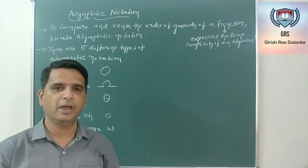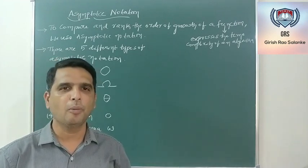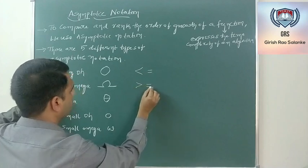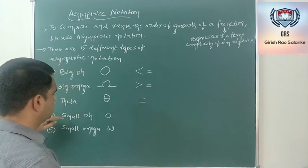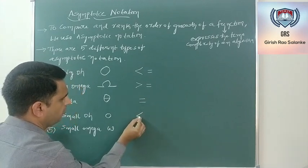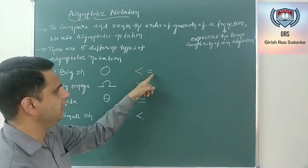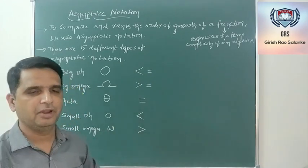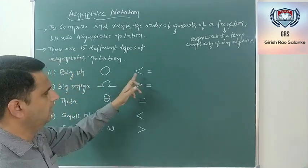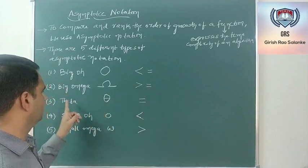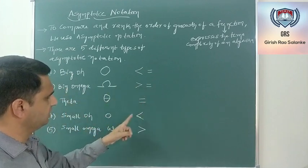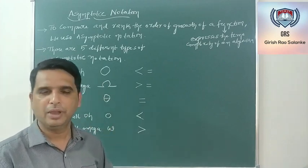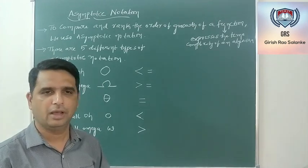These five Asymptotic Notations can be compared to five numerical operators. Big O is nothing but less than or equal to. Big Omega is greater than or equal to. Theta is nothing but equal to. Small O is just less than — note the difference between Small O and Big O: Big O indicates less than or equal to, whereas Small O is just less than. Small Omega is nothing but greater than. Please make sure you remember these five things.